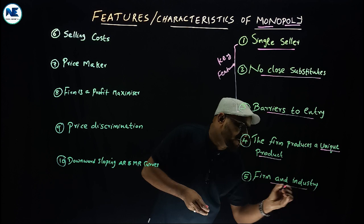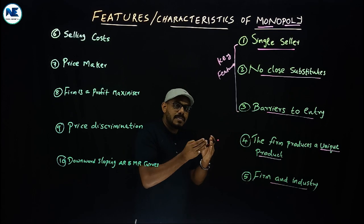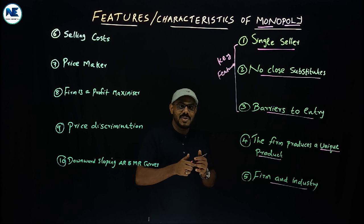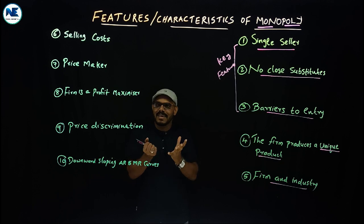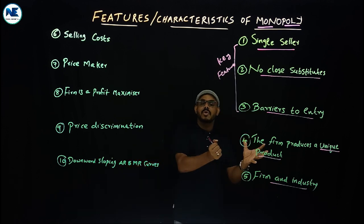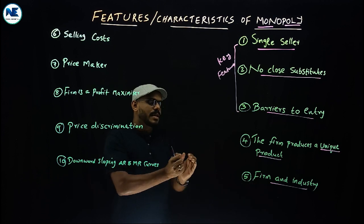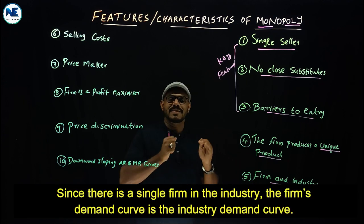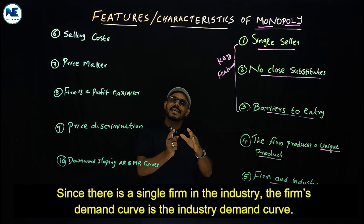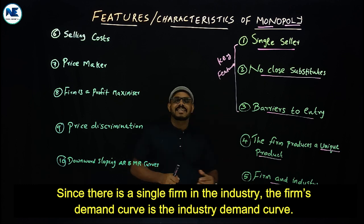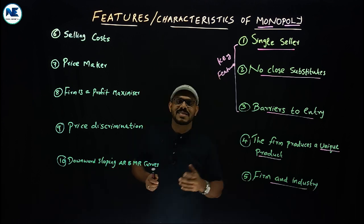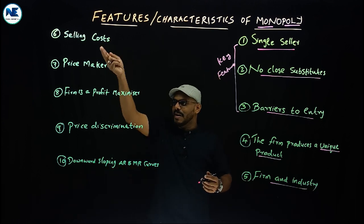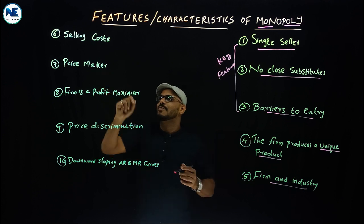The fifth feature is that the firm is equal to the industry. Under monopoly, a single producer, a single firm, a single seller — that itself constitutes the industry. In other markets, an industry is a group of firms, but under monopoly, firm equals industry. The demand curve of the firm is the same as the demand curve of the industry, as discussed in previous videos.